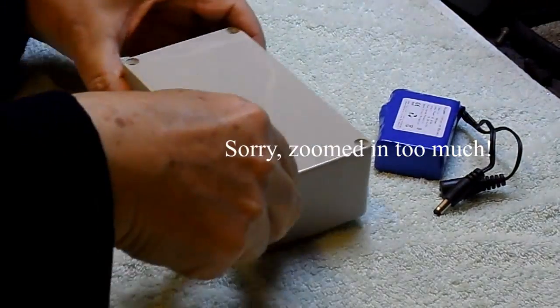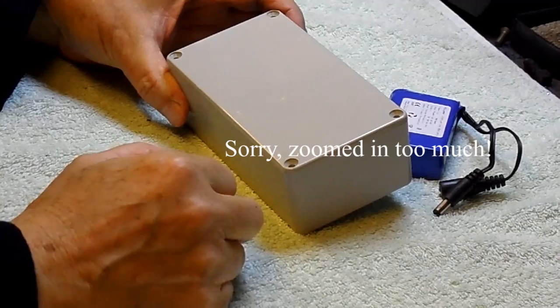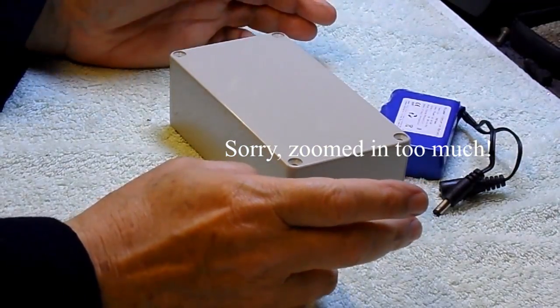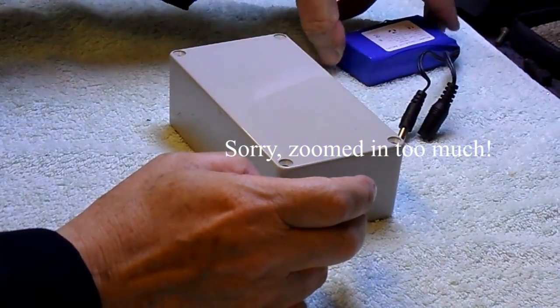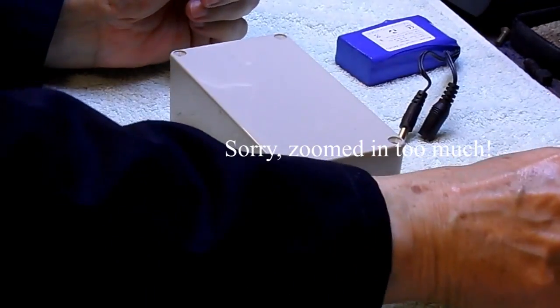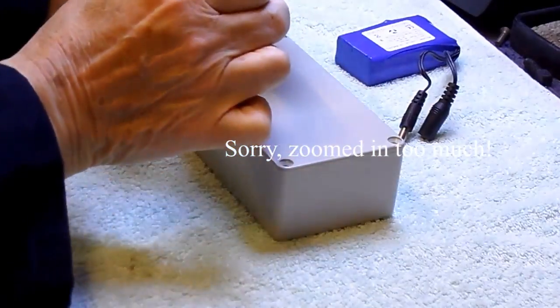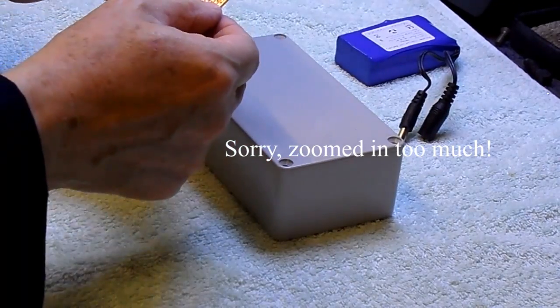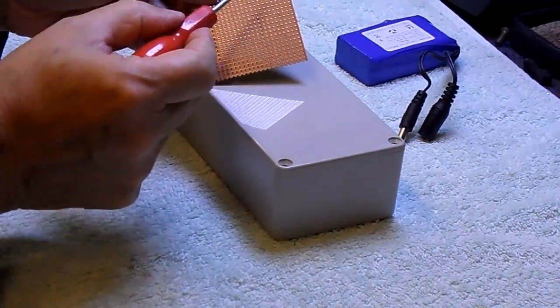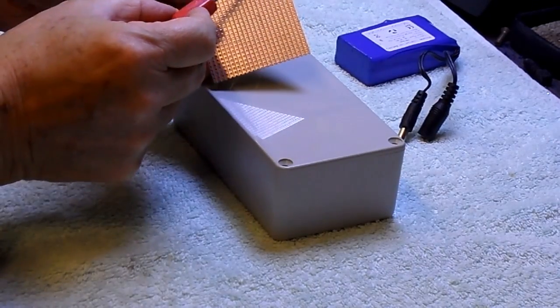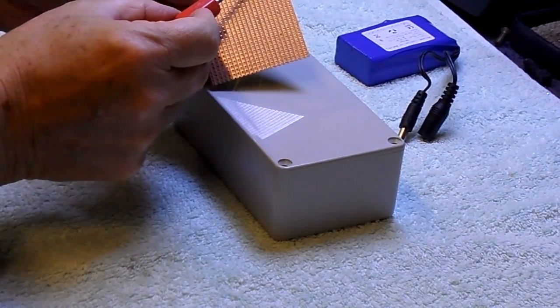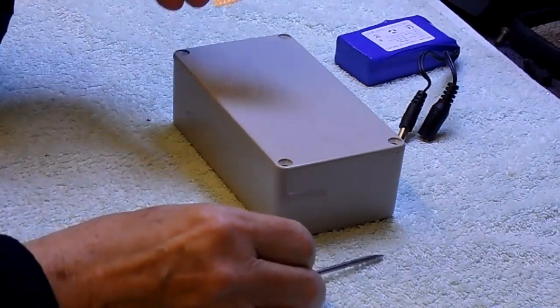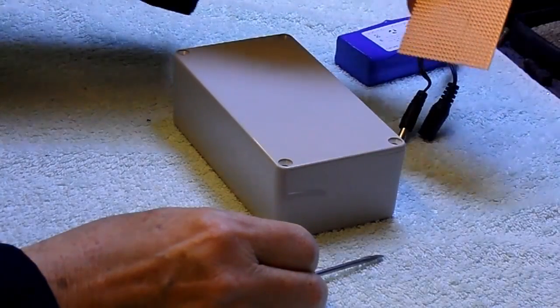Now all of these parts are going to be assembled into this project box. To put it all together we need a few bits and pieces. We've got the battery there. I'm going to join all the connections together using a small piece of this copper face board. The board itself has got a series of holes in it, and in one direction the holes are all joined together by a copper strip. This can easily be used as a form of junction connector.